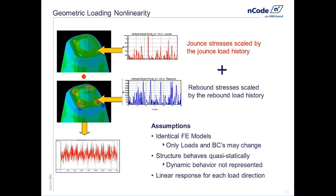Some assumptions in doing this: first, we'll need identical FEA models with identical mesh between the two — that's usually not a problem these days. Also, we want to ensure we have quasi-static structural response, as we're not accounting for dynamic behavior. Once we have these two load cases, we have to assume that it does respond linearly in each load direction — capturing a stress state in the positive, capturing a stress state in the negative, and then linearly scaling in each of those directions.